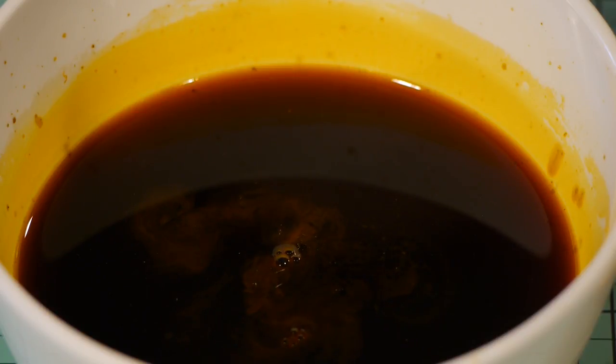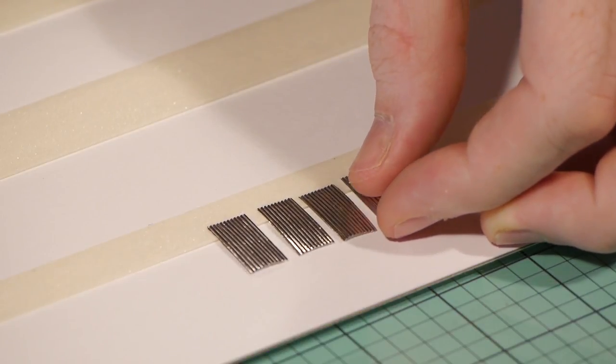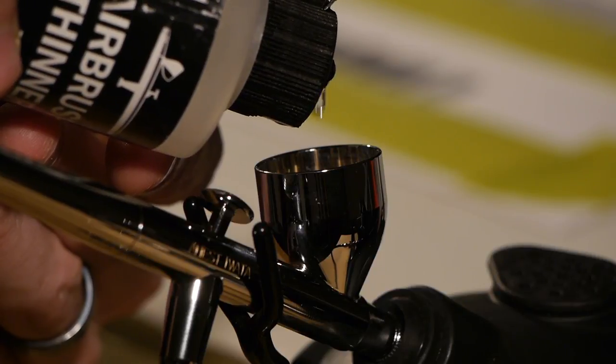The last little bit of preparation for the corrugated sheets is to paint and weather them. On their own the foil is too shiny and needs a little dulling down to look more realistic. This is achieved by painting them.